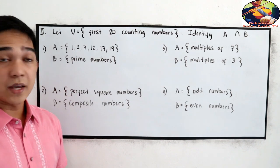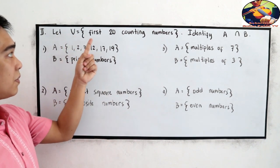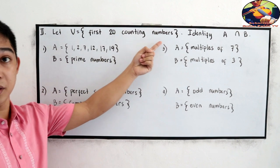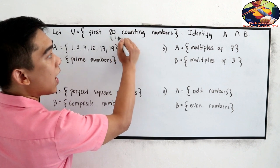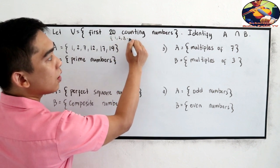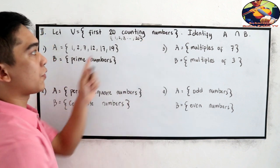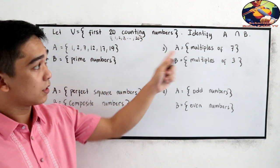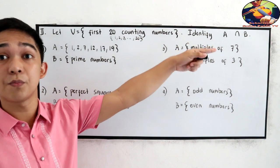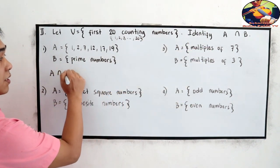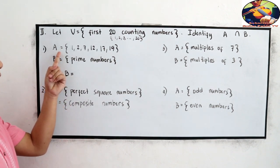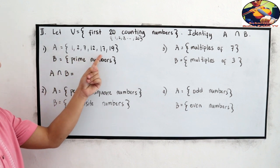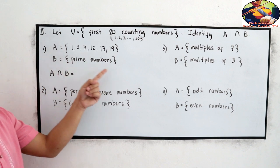In this case, let U be the first 20 counting numbers. That means that is from 1, 2, 3, up to 20. Identify A intersection B. So, you're going to get A intersection B. The intersection of two sets. For number 1, A is equal to 1, 2, 7, 12, 17, 19. Number B, prime numbers.